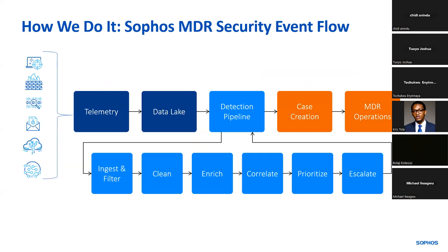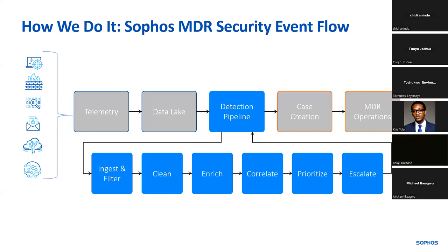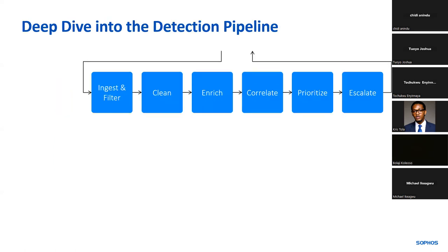At Sophos, we gather all data sources and telemetry and put them into our data lake, which structures the data for the detection pipeline. The detection pipeline cleans, filters, and enriches the data, then creates a case if required and escalates it to MDR operations. The pipeline focuses on filtering what is required — not every alert is needed. We ingest all of them, filter out the noise, clean and standardize, enrich, correlate, prioritize, and escalate if required.